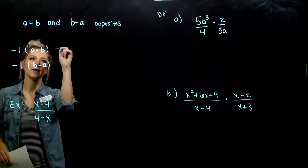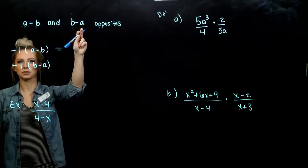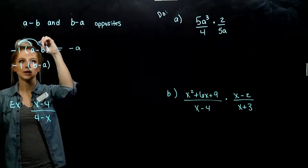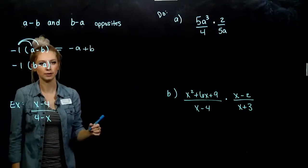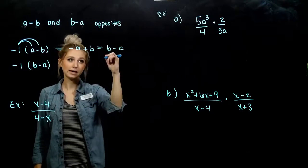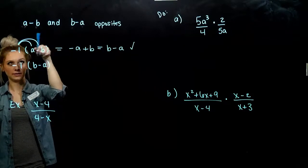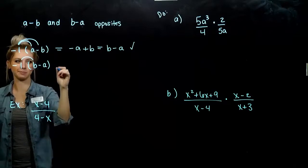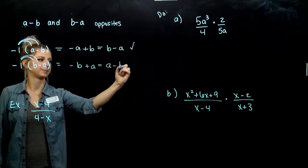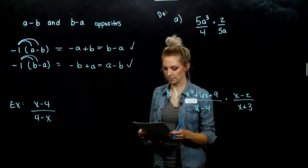Just to show that it's true: if I take A minus B, my first expression, and multiply it by a negative, I get negative A, and a negative times a negative gives me a positive B. We know addition is commutative, so I can flip that around and we get that second expression. They are opposites — multiply by negative and get out the other expression. Down here, we're looking at negative B and positive A; flip it around since it's commutative, and we get the first expression back.